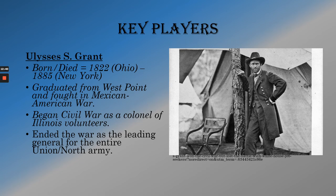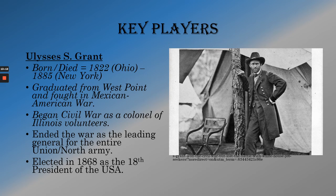Grant kept winning battle after battle, so Lincoln kept giving him promotion after promotion — because most of the generals Lincoln was trying at the start of the war weren't having much success. But every time Grant fought a battle, the North did pretty well. By the middle of the war, Grant was in charge of the entire Union Army. Then, a few years after the war — sort of like how George Washington won the Revolutionary War and became our first president — Grant won the Civil War and was elected our 18th president.